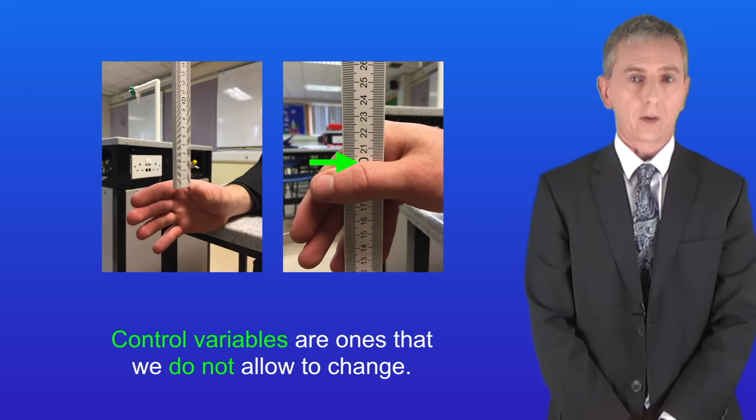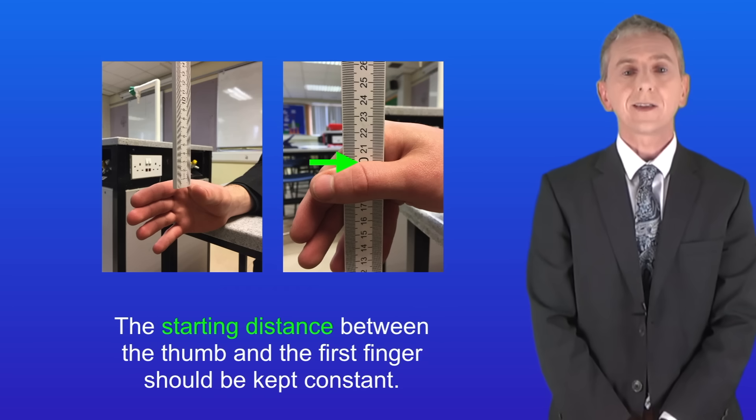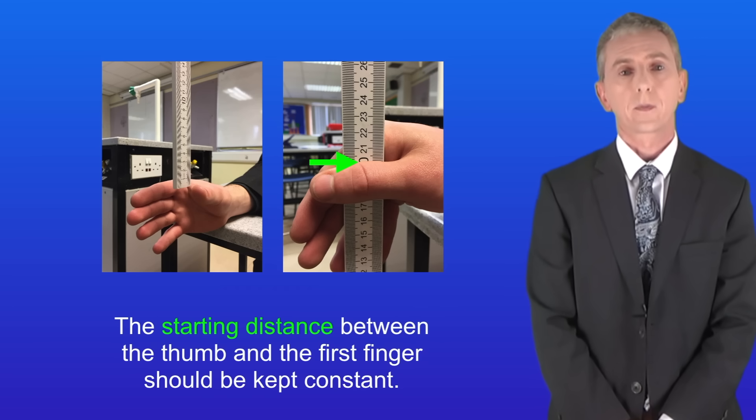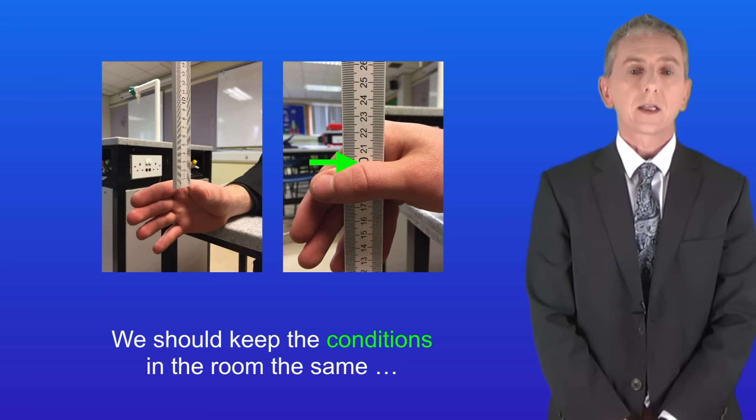Control variables are ones that we don't allow to change and there are several control variables in this experiment. Firstly the starting distance between the thumb and the first finger should be kept constant. Secondly we should always measure the ruler at the top of the thumb. And lastly we should keep the conditions in the room the same, for example the lighting and the level of background noise.